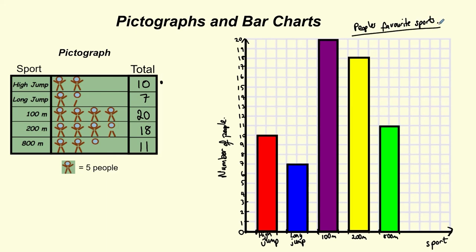Okay, and you've got a nice visual representation. Looking at that immediately, you can see that the 100 meters was the most popular, that had 20 people picking that, and then you can see which is the next most popular, and so on, right down to the bottom where the long jump was least popular. So that's a little explanation of how you can use pictographs and bar graphs to display and read information.